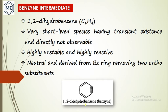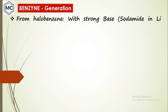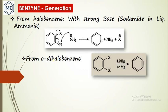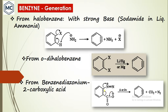The structure is called 1,2-didehydrobenzene or benzyne. The general name for such species is aryne — you need to study benzyne here. Benzyne is generated from halobenzene in the presence of a very strong base like sodamide in liquid ammonia — dehydrohalogenation takes place to form benzyne. A second method is from ortho-dihalobenzene in the presence of lithium, mercury, or magnesium, which undergoes dehalogenation.